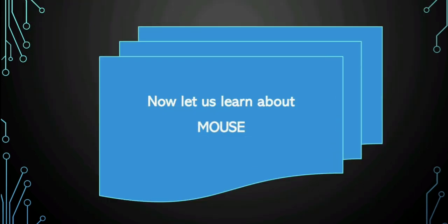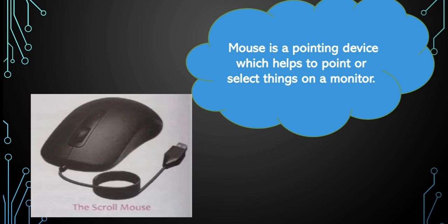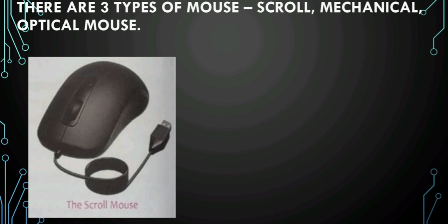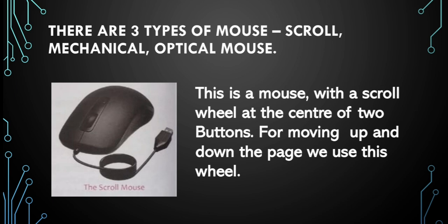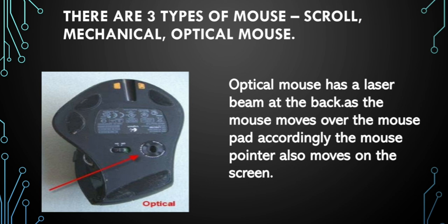Now let's learn about the fourth main part of the computer, that is mouse. The mouse is a pointing device which helps to point or select things on a monitor. There are three varieties of mouse: scroll mouse, mechanical mouse, and optical mouse. The scroll mouse has a wheel at the center of two buttons, used for moving up and down through the page. The mechanical mouse has a rubber ball at the back side — as the ball moves, the mouse pointer also moves on the screen. In the optical mouse, the rubber ball is replaced by a laser beam; as the laser beam moves, so does the pointer on the screen.